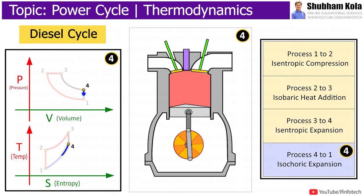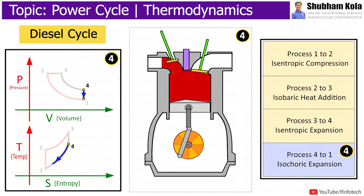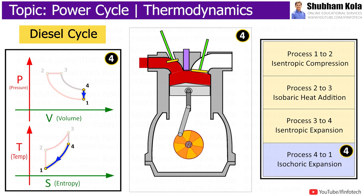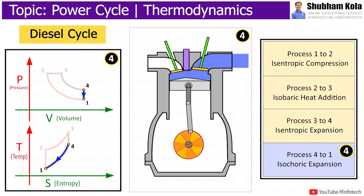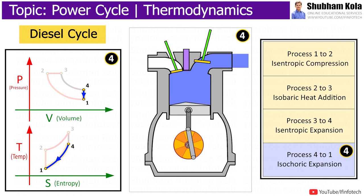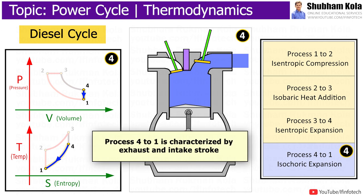Process 4 to 1 is an isochoric process, where volume is constant and heat is removed until pressure comes down to P1. Here, heat is removed from the system by flushing out the combusted gases.